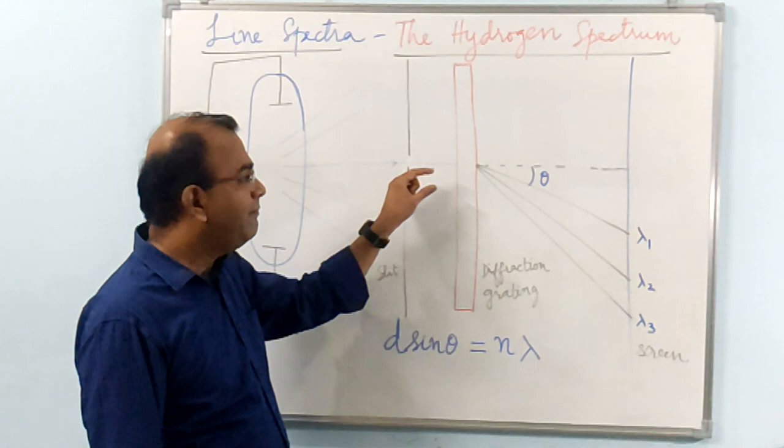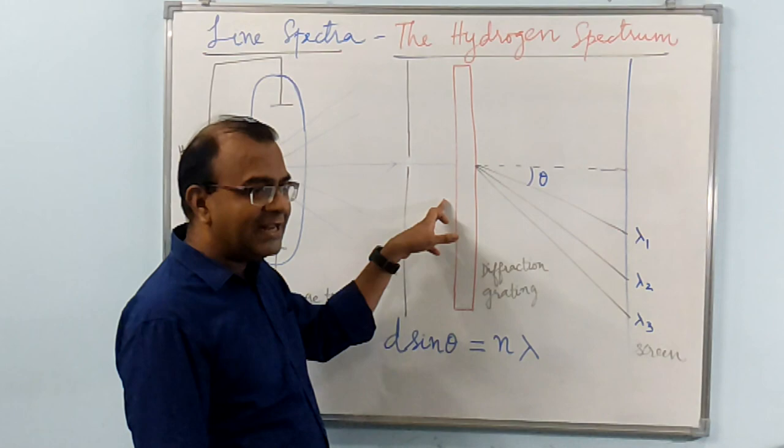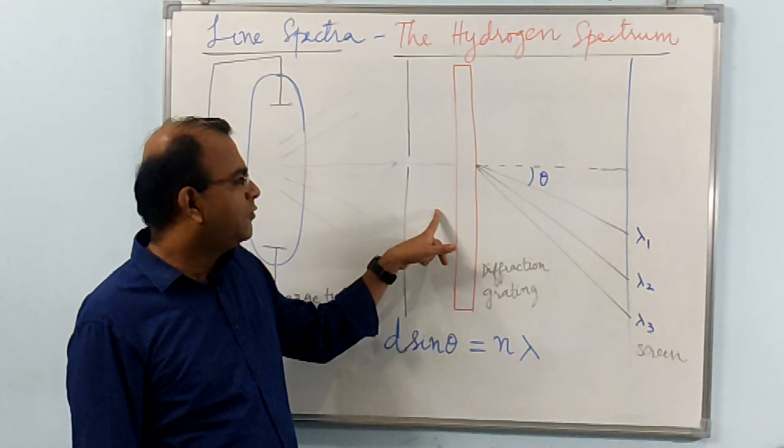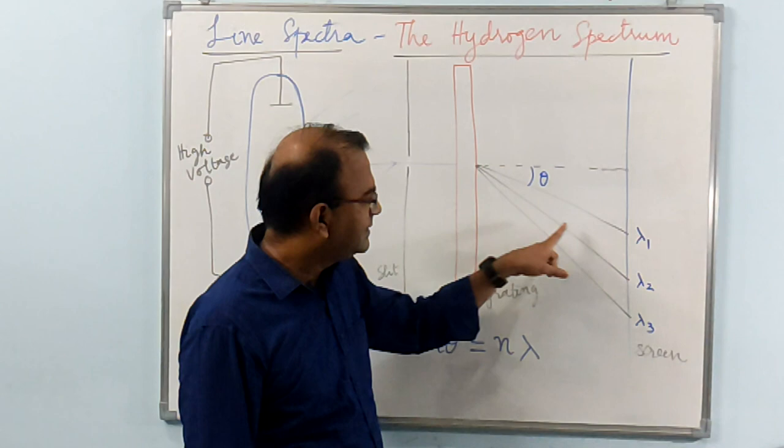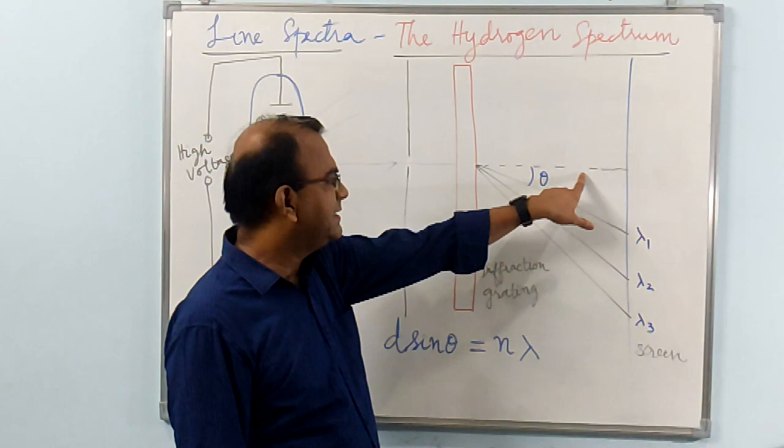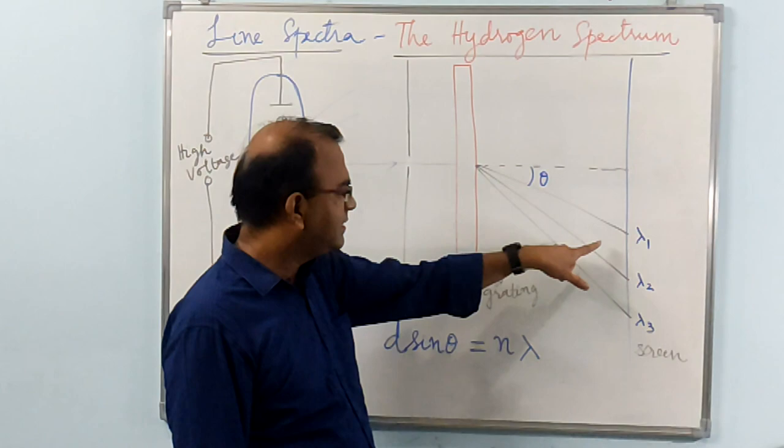Then you have a slit through which the light passes through to be made into a narrow beam, and then that falls onto the diffraction grating. The grating consists of a number of closely drawn lines in order to be able to cause diffraction. Then the diffracted beam is seen here. This one is the direct undiffracted beam.